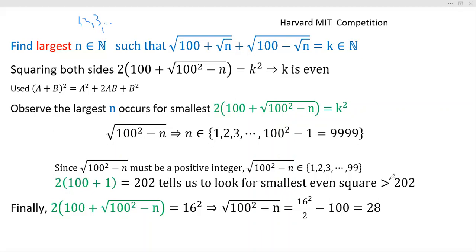Notice that 15² is greater than 202—15² is 225—but 15 is not even. So we have to go up to 16². That's the number that gets it done.